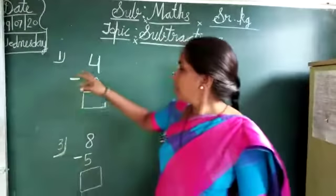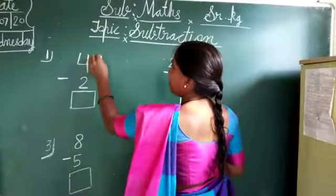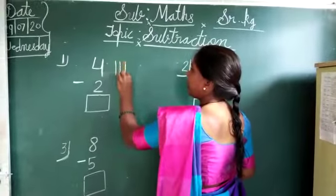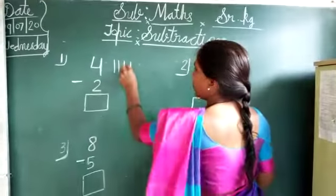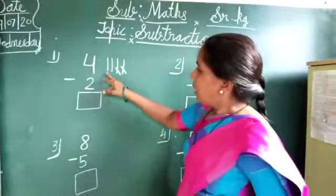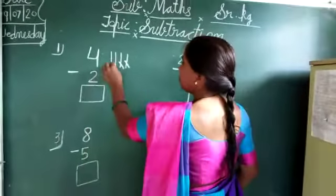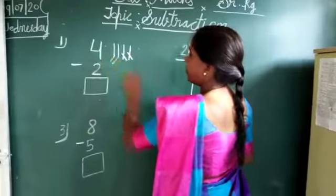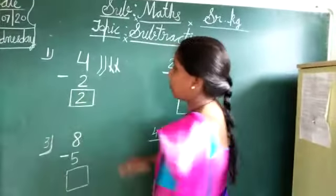First of all, this number is 4. I make line 1, 2, 3, 4. Next number is 2. I will cross out the line 1, 2. How many lines are removed? 1, 2. So the answer is 2.